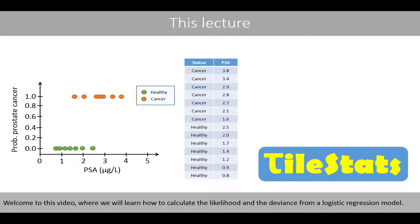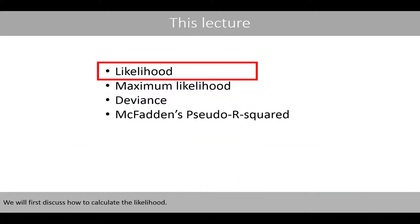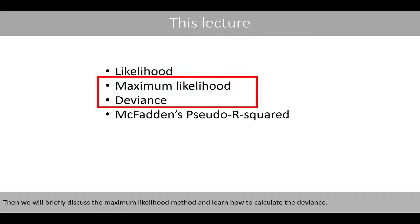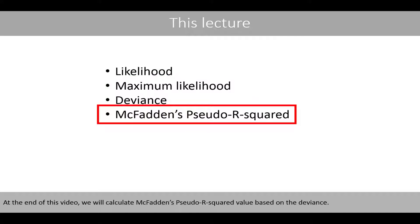Welcome to this video where we will learn how to calculate the likelihood and the deviance from a logistic regression model. We will first discuss how to calculate the likelihood, then briefly discuss the maximum likelihood method and learn how to calculate the deviance. At the end of this video, we will calculate McFadden's pseudo R-squared value based on the deviance.